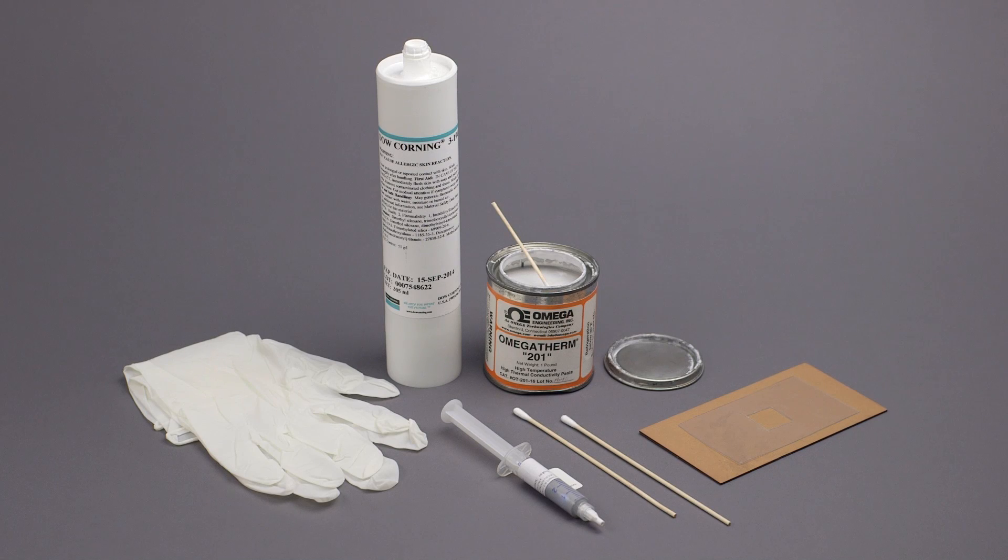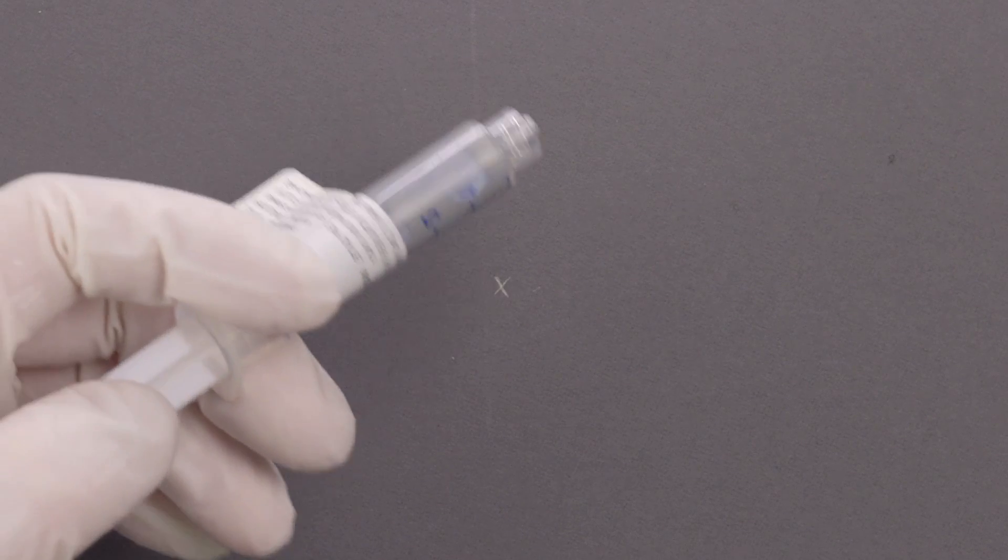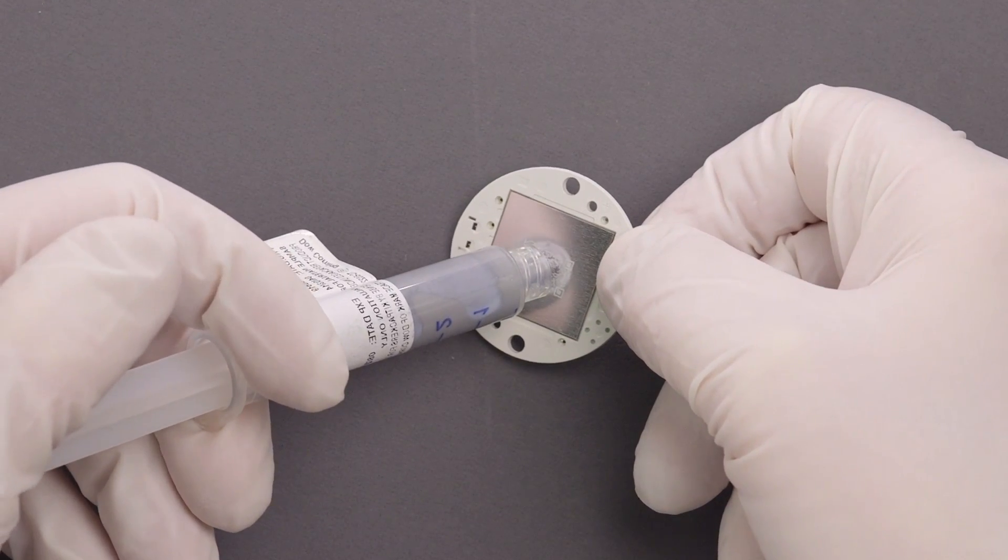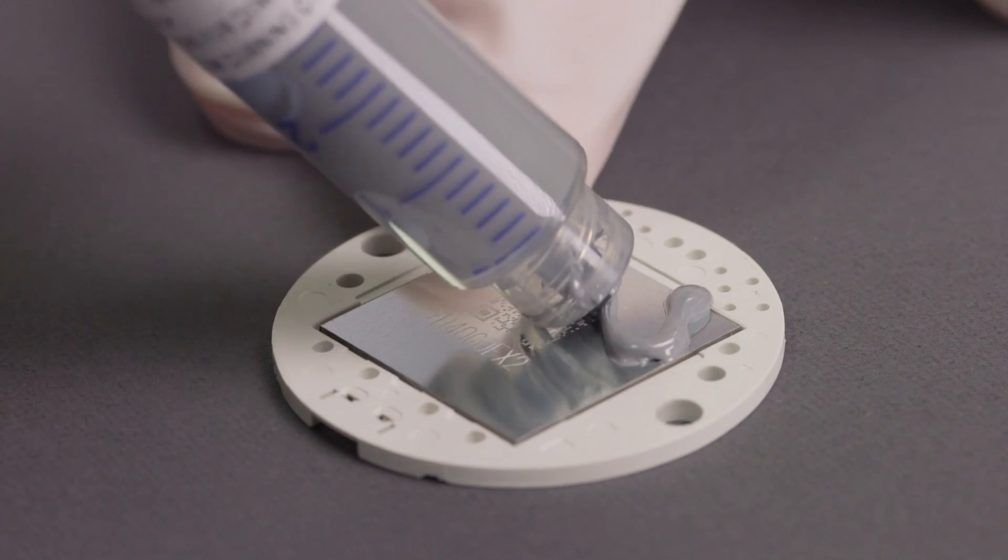Thermal greases are usually graphite based or polymeric substances. They are most commonly provided in jars, syringes, or tubs to be applied by hand or with the use of a dispensing system. The use of a syringe allows thermal grease to be dispensed in a measured amount in the center of an array or in a pattern across the back of a substrate.